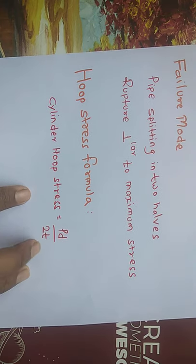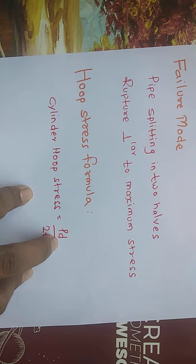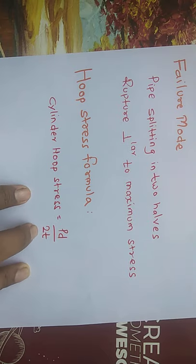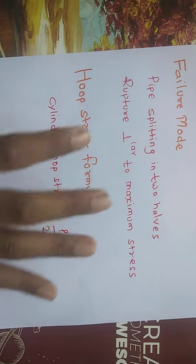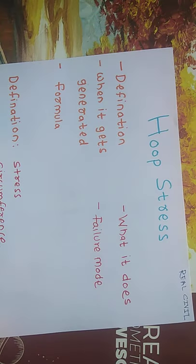Our last point is the hoop stress formula for a cylindrical body. Hoop stress equals PD divided by 2T, where P is the internal applied pressure, D is the internal diameter, and T is the thickness. I hope you have got the concept of hoop stress. Please like and share the Real Civil YouTube channel. Thank you.